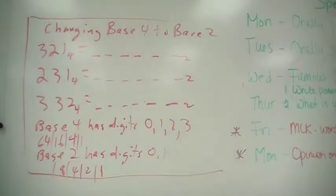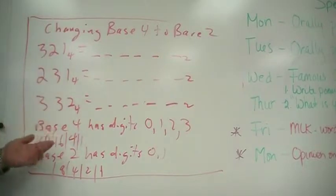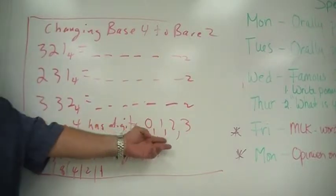All right, some examples of changing base 4 to base 2. What you do, first of all, base 4 is the digits 0, 1, 2, and 3.